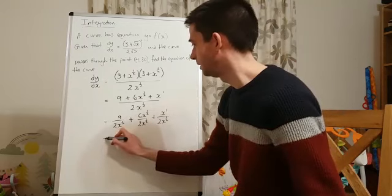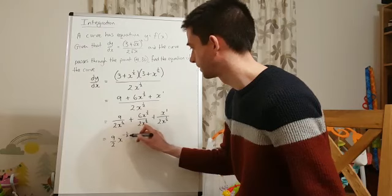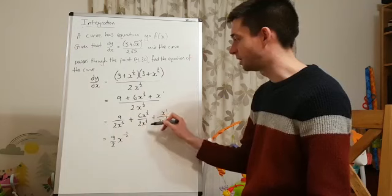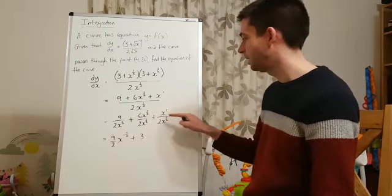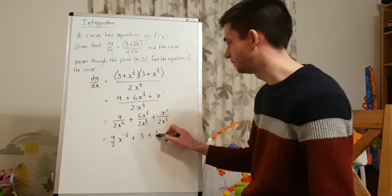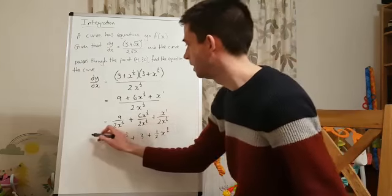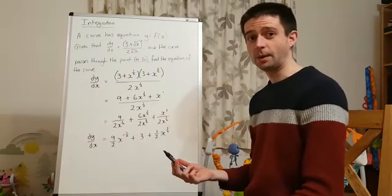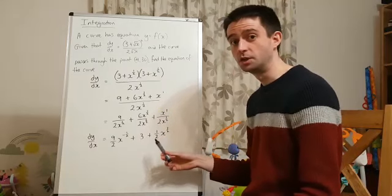And that, in number x power form, is 9 over 2 x to the power of negative a half. This one here, x to the half, x to the half cancels out, so I've just got plus 3, 6 divided by 2. Now, here, importantly, because that 2 is on the denominator, I've got plus 1 half. And I've got x to the power of 1 half. And that is my expression for dy dx in number x power form. I haven't done any integration yet. I've just got it into a form where I could integrate it.